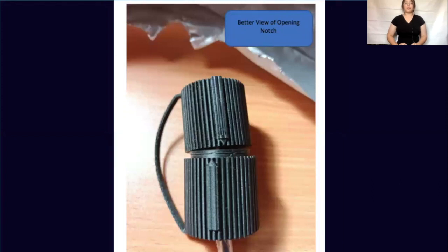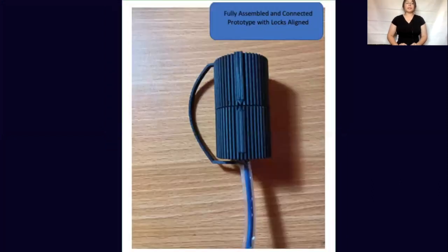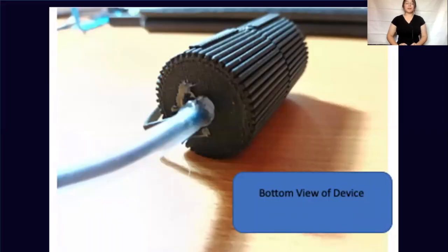Here is a better view of the opening notch. Here is a fully assembled and connected prototype with locks aligned — this is how you would first connect the top piece and bottom piece together before locking it. Here is a bottom view of the device, showing the rubber tubing around the charger cord as well as the hot glue used previously.